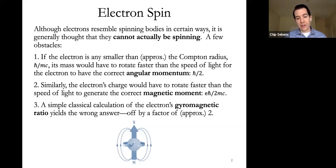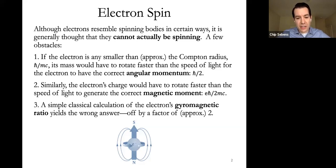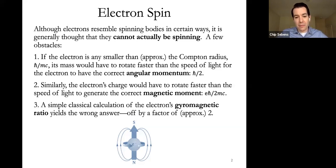Similarly, if the magnetic moment of the electron is due to rotation of its charge, that charge would have to rotate faster than the speed of light to generate the correct known magnetic moment. A third reason not to think of the electron as actually spinning is that you get the gyromagnetic ratio wrong: a spinning charged body will have angular momentum and magnetic moment, but the ratio between them won't match the electron's ratio, at least by the simplest calculation.